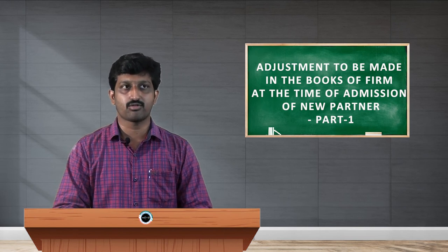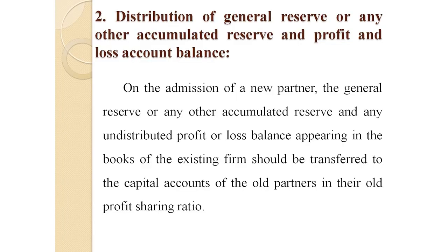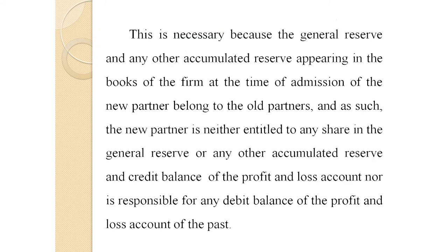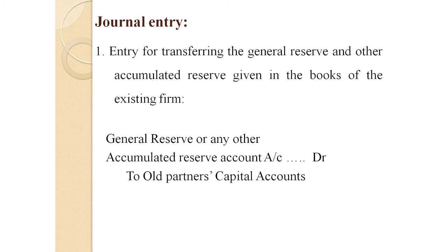The second important adjustment is the distribution of general reserve or any other accumulated reserve and profit and loss balance on the admission of a new partner. The general reserve or any other accumulated reserve and any undistributed profit or loss balance appearing in the books of the existing firm should be transferred to the capital account of the old partners in their old profit sharing ratio. This is because the general reserve belongs to the old partners — the new partner is neither entitled to any share in it nor responsible for any debit balance of the profit and loss account from the past.